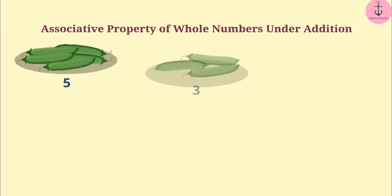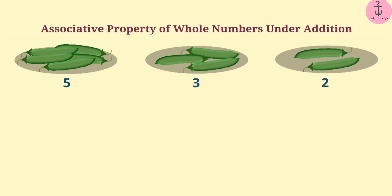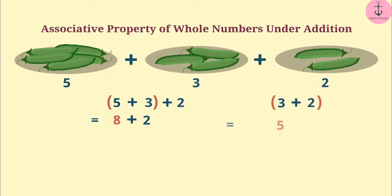Let's talk about the associative property of whole numbers under addition. Suppose there are 5 beans, 3 beans and 2 beans. If we want to find out the total number of beans, we need to add them. One way is to first make a group of 5 and 3 and add 2 to their sum. Or we can make a group of 3 and 2 and then add 5 to the resultant sum. No matter how we group the numbers, the result of addition will be the same.